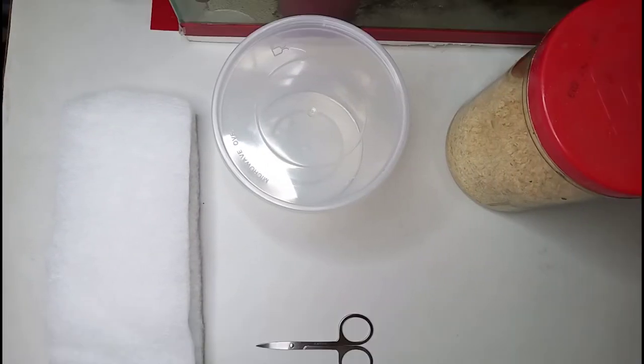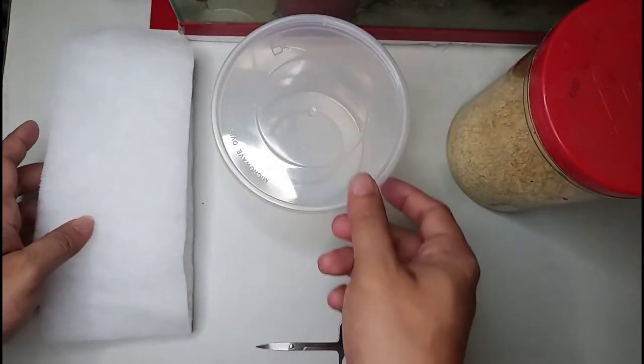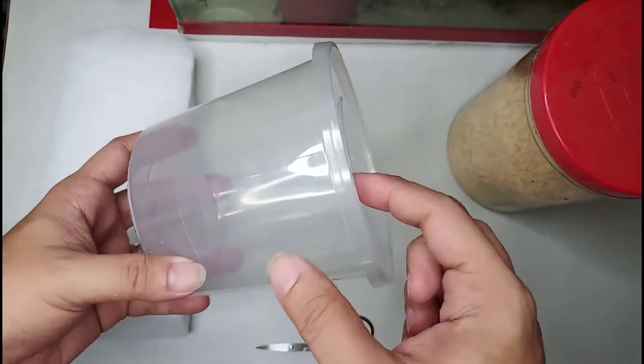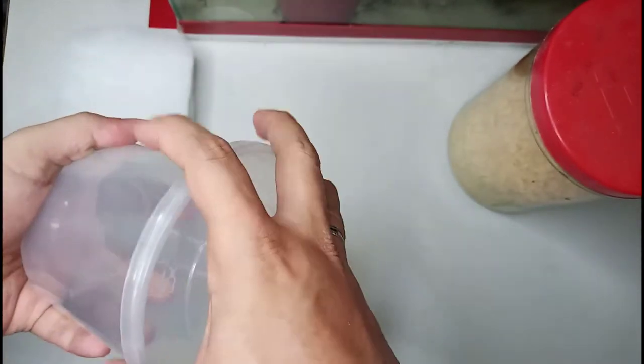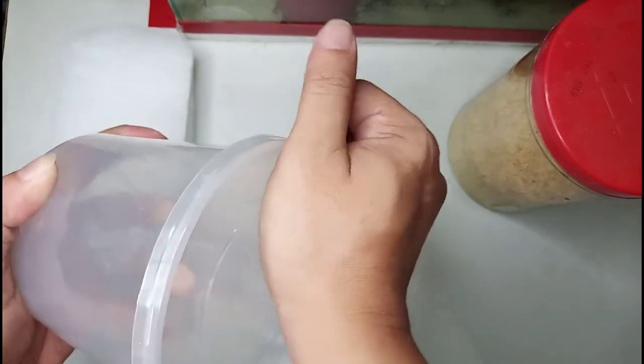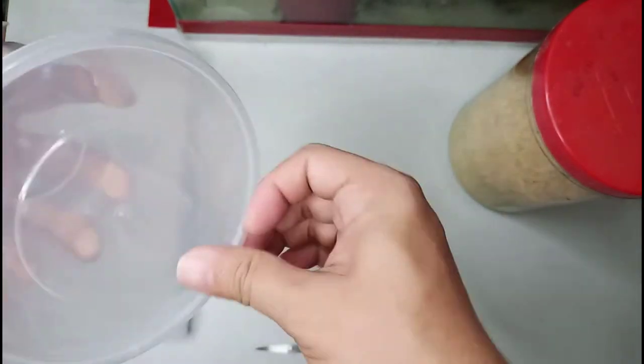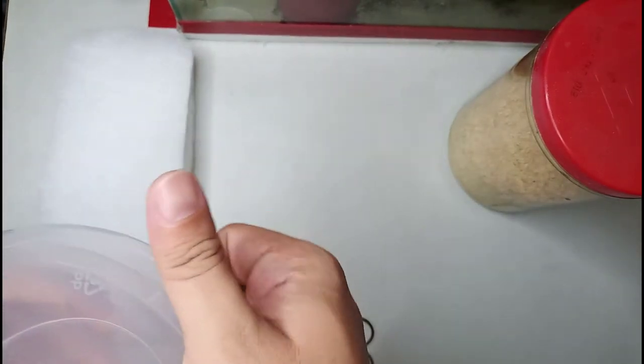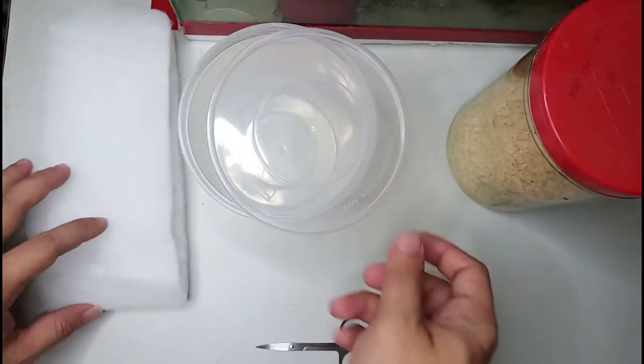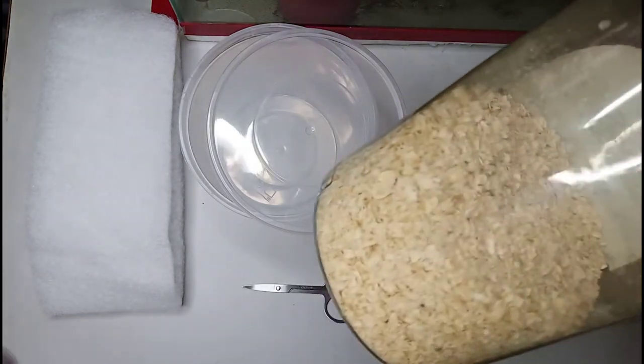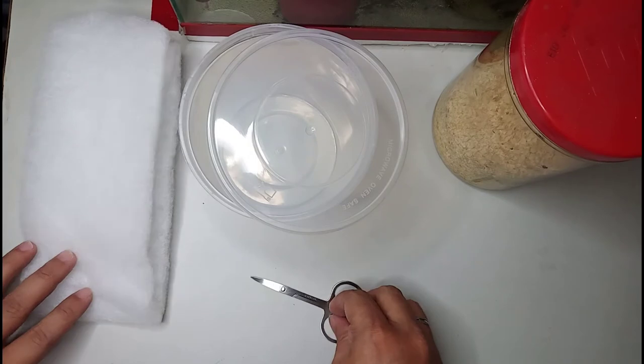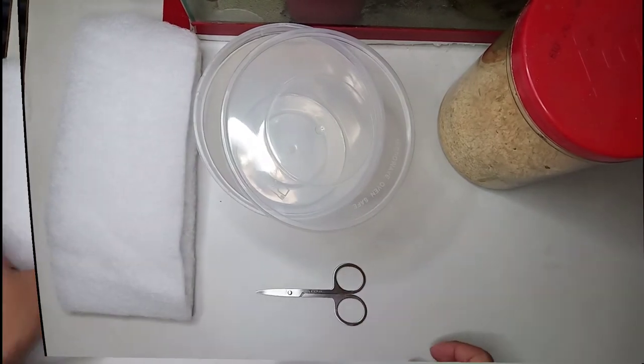Alright, so these are the materials that you will need to create your culture for microworms: cotton filter like this one, a plastic container, make sure you have the lid, small scissors, oatmeal - any brand will do but Quaker Oats is the best - and last one is hot water.